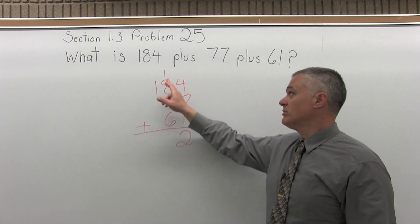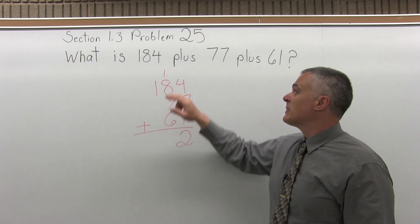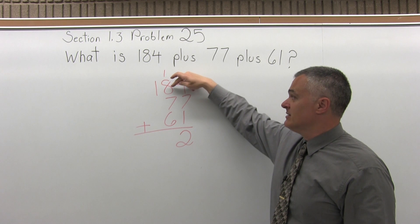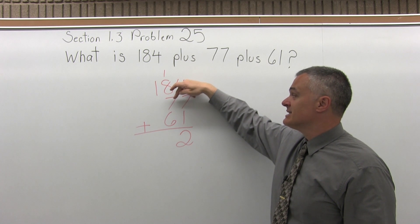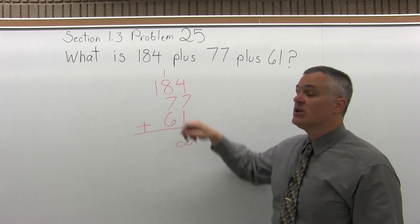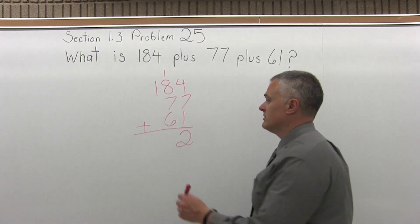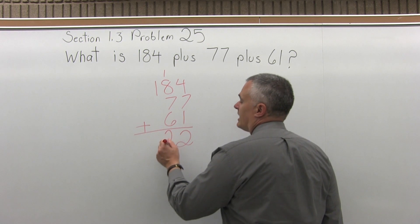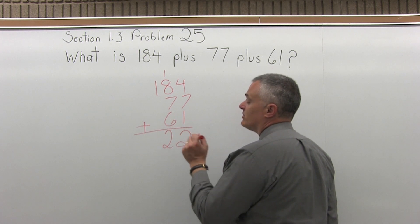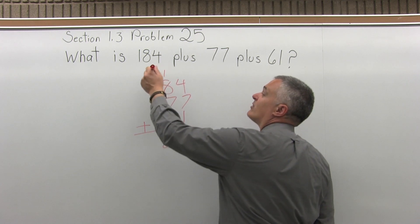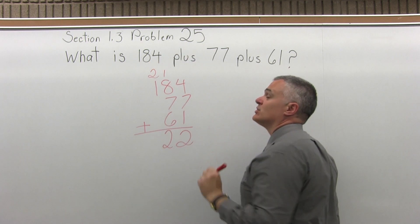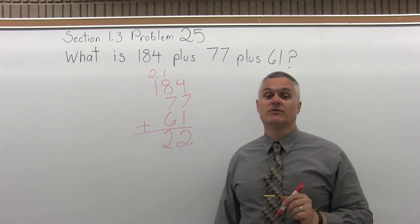And now I'll add 1 plus 8 plus 7 plus 6. So 1 plus 8 is 9. 9 plus 7 is 16. 16 plus 6 more is 22. So for 22, I put the 2 from the right side of the 22 under the column of digits that I just added. I carry the 2 from the left side of the 22 to the top of the next column of digits that I have to add.